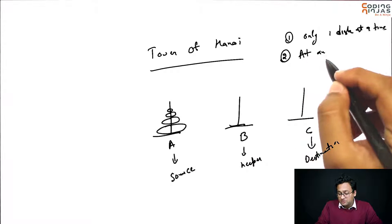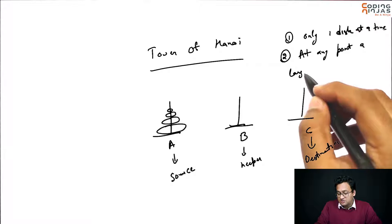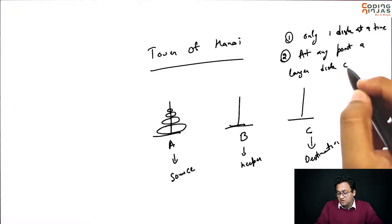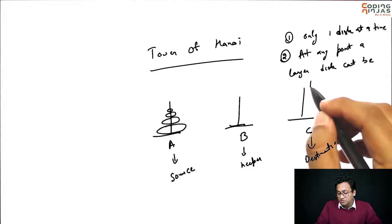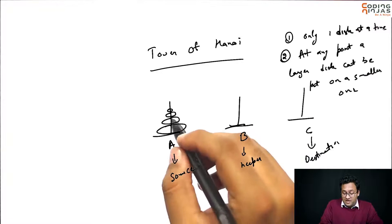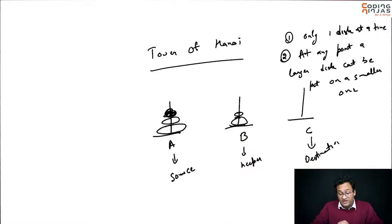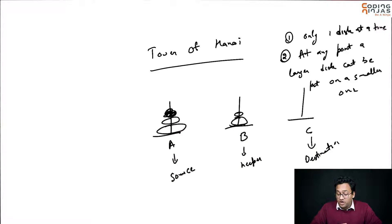So, at any point, a larger disk cannot be put on a smaller one. Right? So, this is fine. If I had these two here, that is fine as well, but you cannot have a larger disk sitting on a smaller disk. These are two rules that you need to follow.